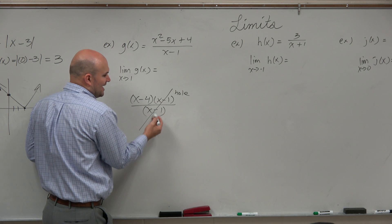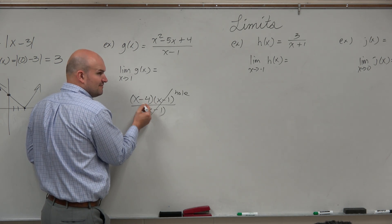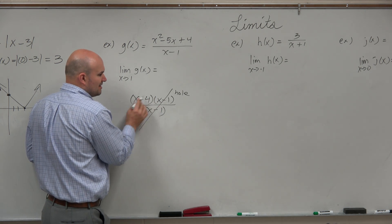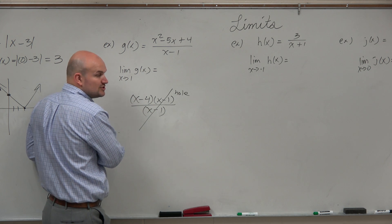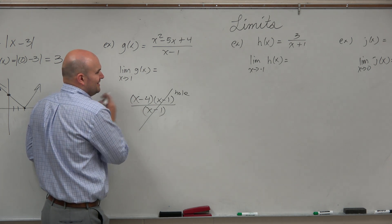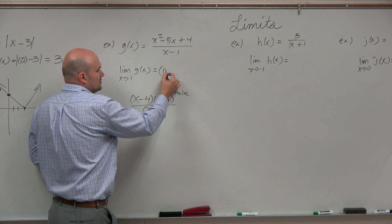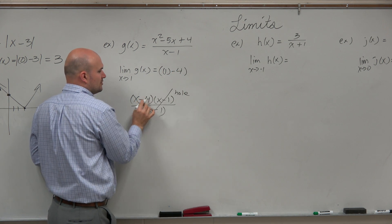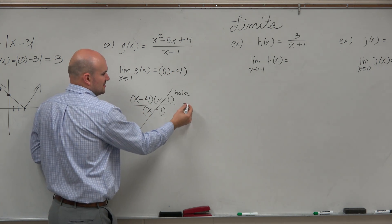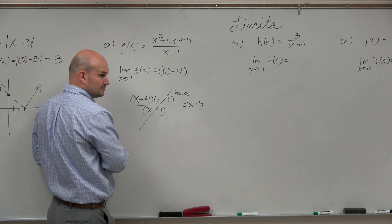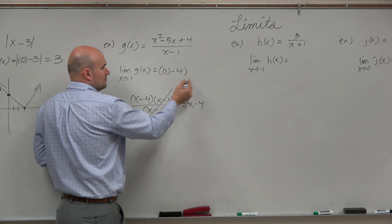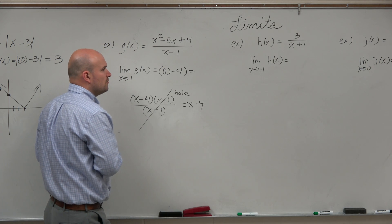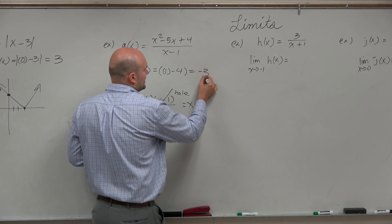So what value - what we have is, we want to find the value that this graph is approaching at that hole. So now we can go ahead and apply direct substitution for the remaining expression, which is just x-4. So now, when we apply direct substitution here, we have 1-4, which equals negative 3.